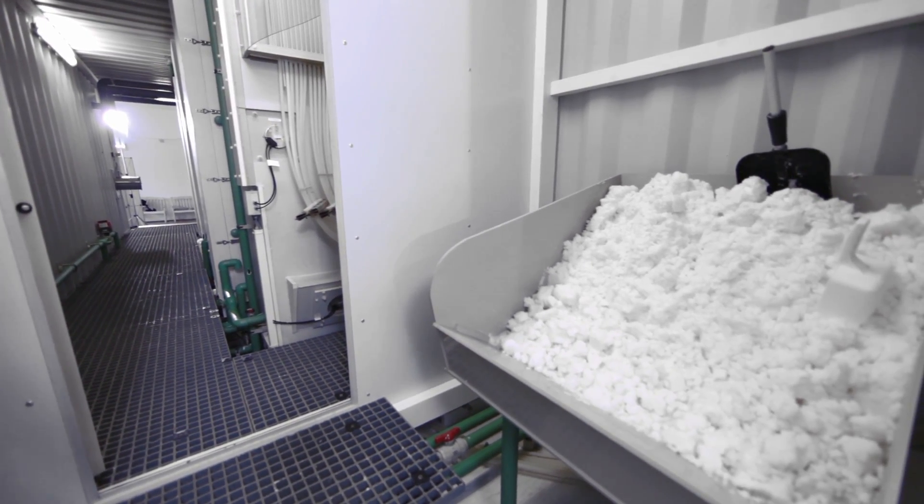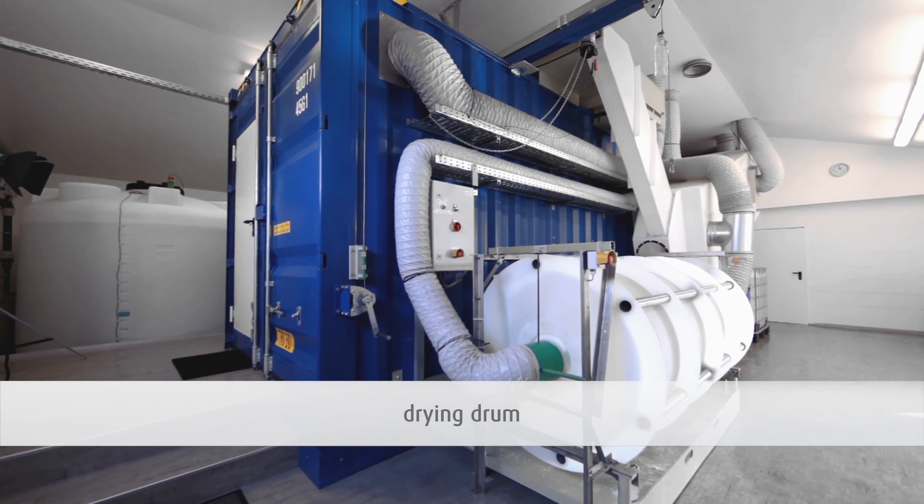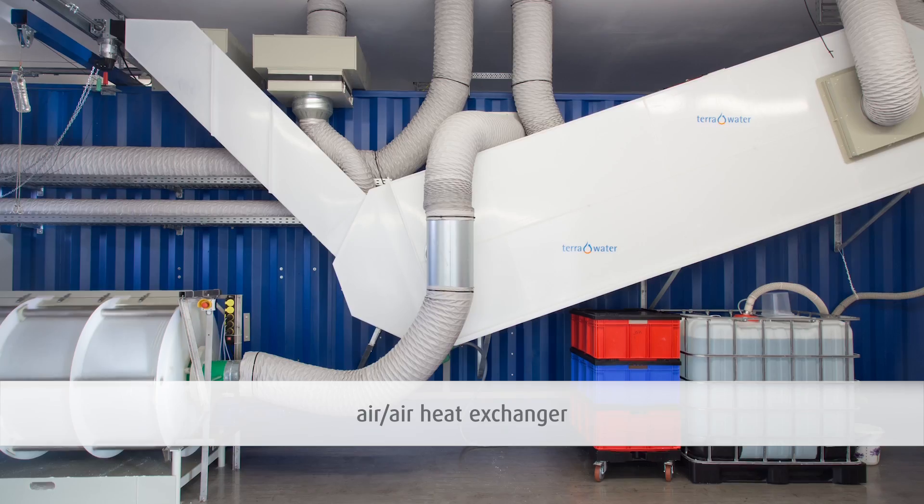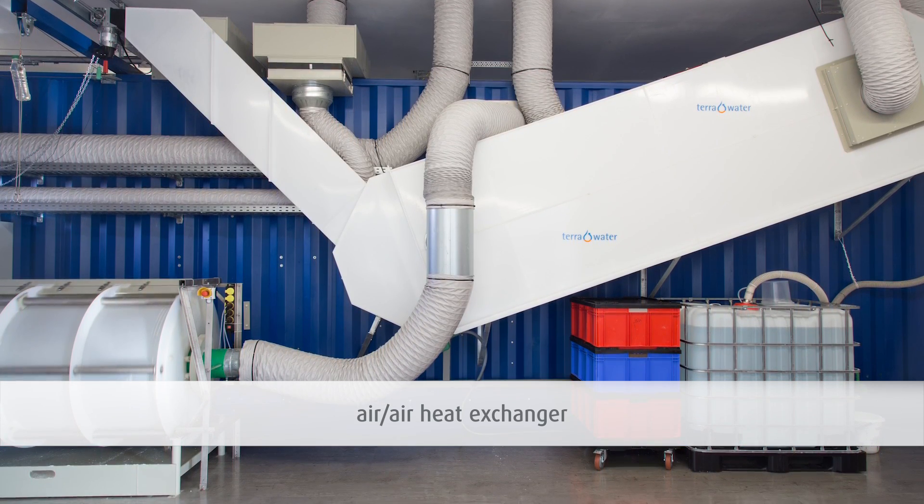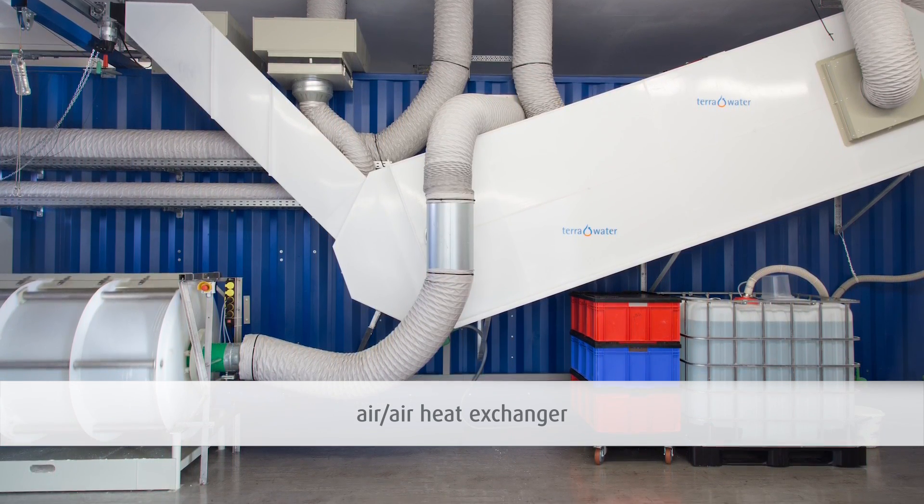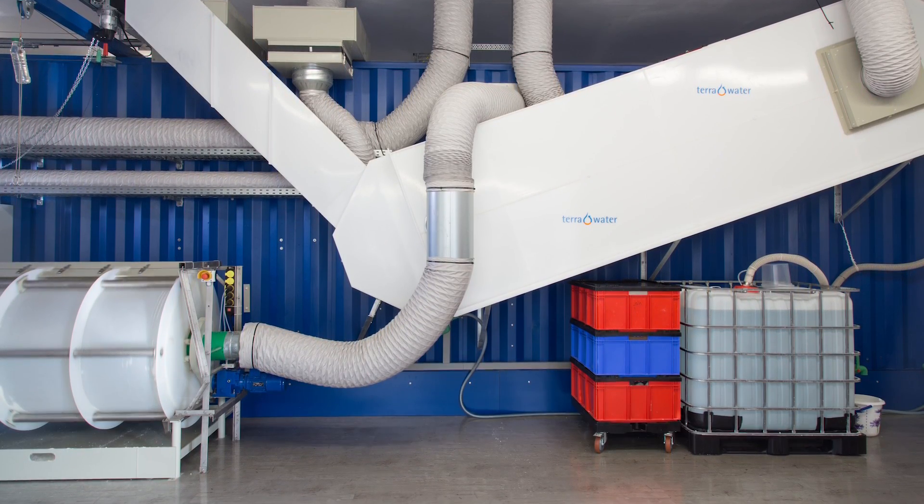The freshly scooped salt enters into the drying drum after draining. Here, the salt gets the desired dryness. For drying, the residual heat of the Terra saline is made use of. The air-air heat exchanger, like the entire system, is completely made of synthetic material to avoid any corrosion.